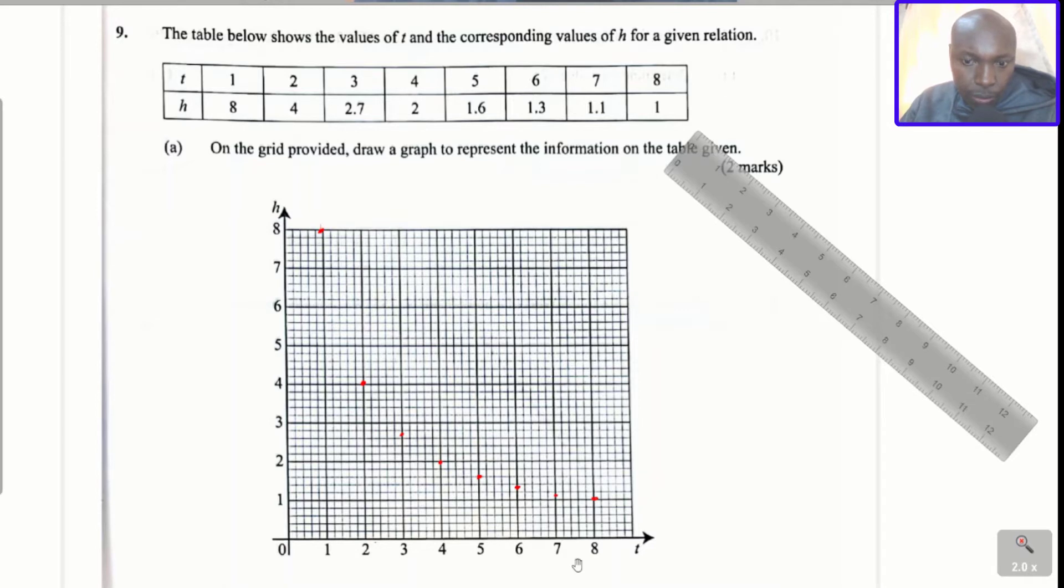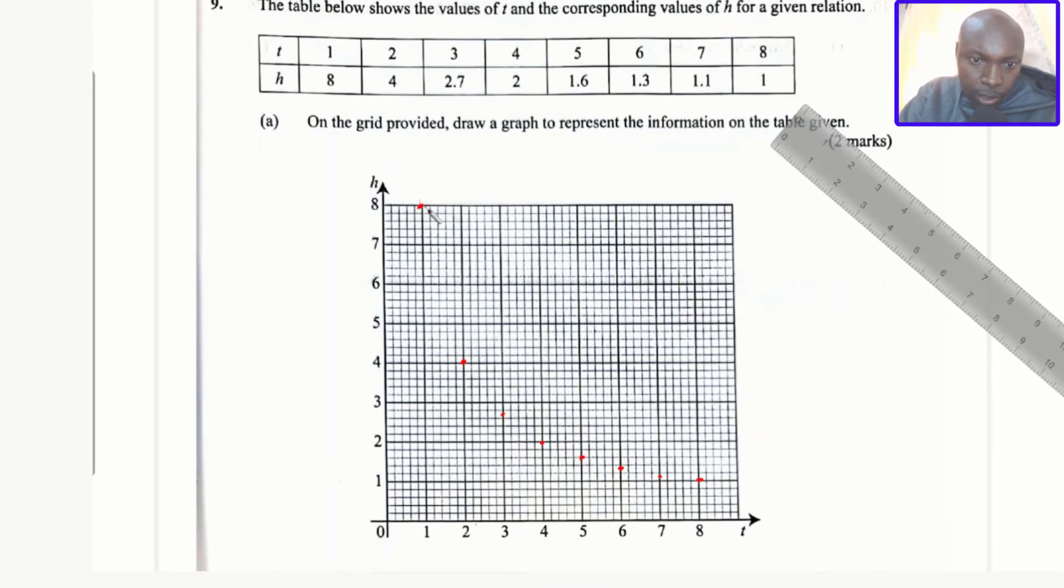The value of t in the x-axis then h in the y-axis. So I've done the plotting. So one eight, one eight should be there, you can see. Then two four, two four is there. Three 2.7 is there.